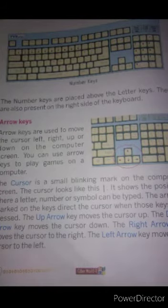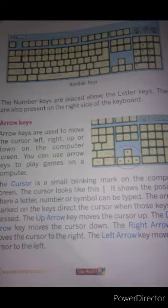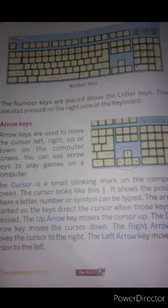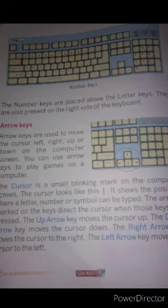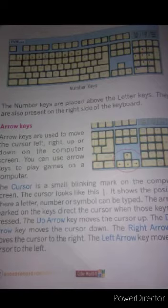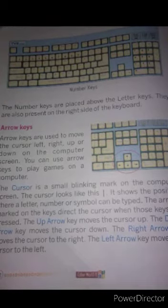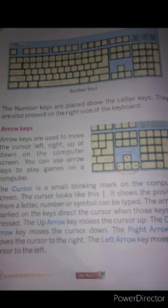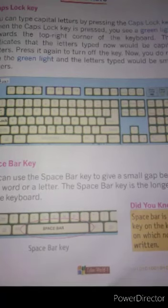The cursor shows the position where a letter, number, or symbol can be typed. The arrow mark on the keys directs the cursor when those keys are pressed. The up arrow key moves the cursor up, the down arrow key moves the cursor down, the right arrow key moves the cursor to the right, and the left arrow key moves the cursor to the left.